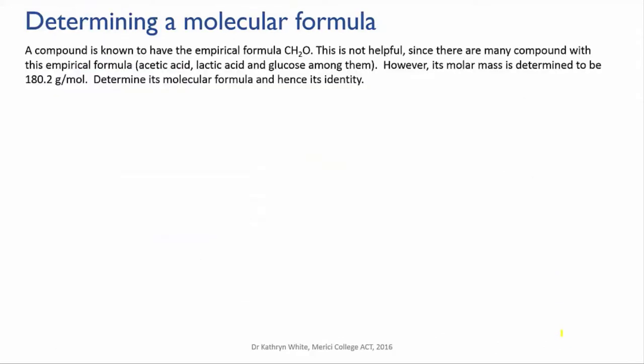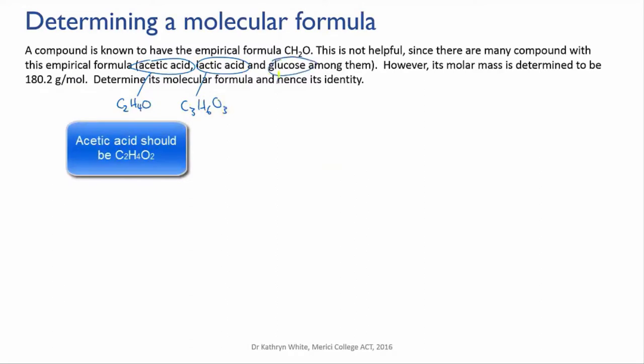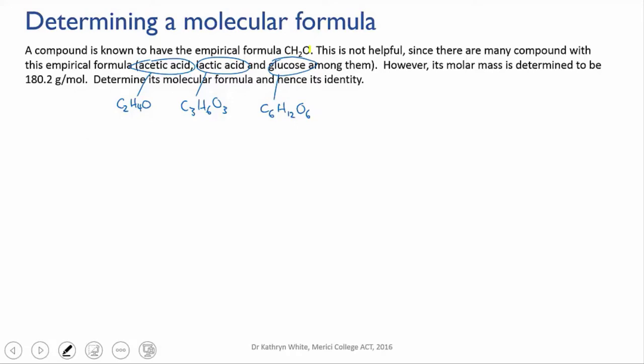Let's try an example. A compound is known to have the empirical formula CH2O. This is not helpful since there are many compounds with this empirical formula. Acetic acid, lactic acid and glucose are among them. However, its molar mass is determined to be 180.2 grams per mole. Determine its molecular formula and hence its identity.